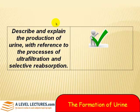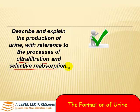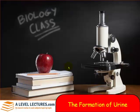In this video we've described and explained production of urine with reference to processes of ultrafiltration and selective reabsorption. We've really focused on what's happening in the glomerulus and Bowman's capsule and also in the PCT. In a subsequent video we'll look at what happens in the rest of the kidney. Thank you for watching and goodbye for now.